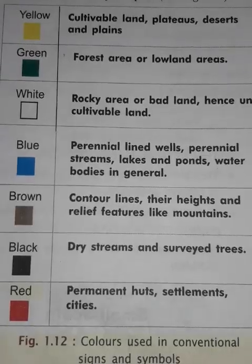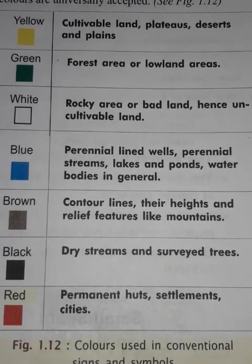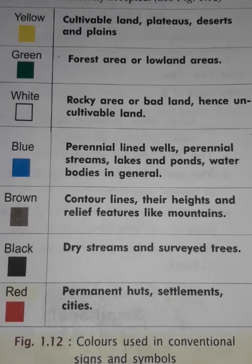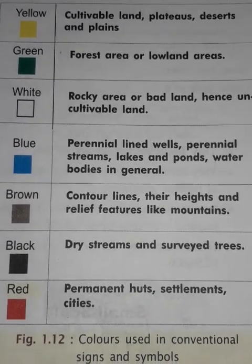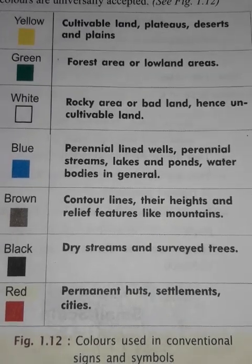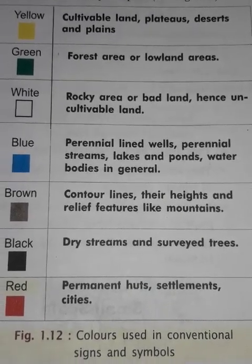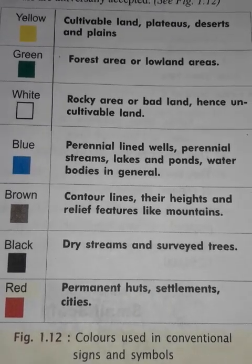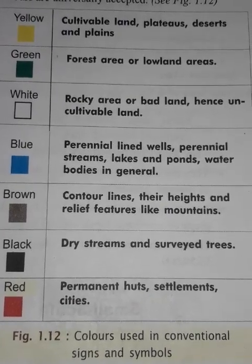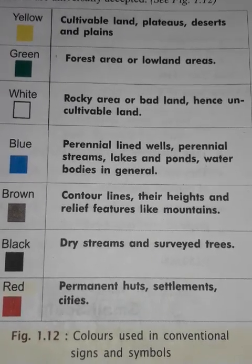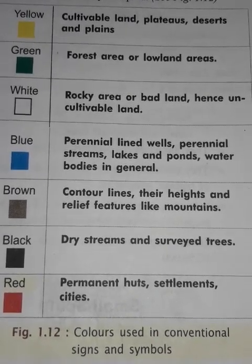There are different colors in a map by which we can easily understand a particular feature. You can see this on this page. Yellow shows cultivable land, plateaus, deserts, and plains. Green shows the forest area or lowland. White shows the rocky area or badland because it is uncultivable land. Blue, which you have seen on maps, shows water bodies — it may be an ocean, a sea, or a river.